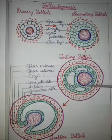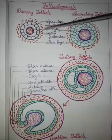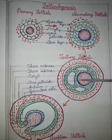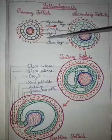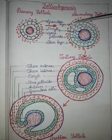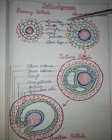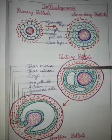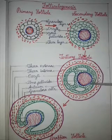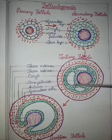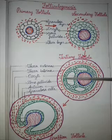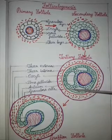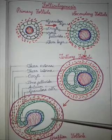In all three stages of the diagram, the primary oocyte is present inside. The primary follicle has a single layer of granulosa cells, the next stage has many layers of granulosa cells and a theca layer, and the tertiary follicle has theca interna, theca externa, and the oocyte. A fluid-filled cavity called the antrum forms in the tertiary follicle.